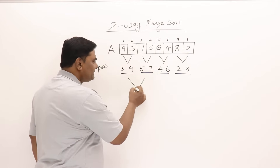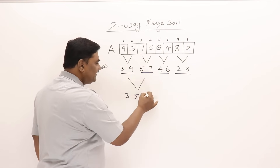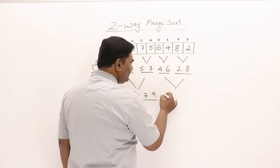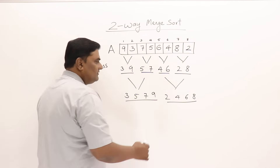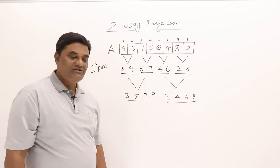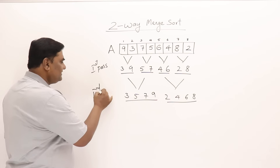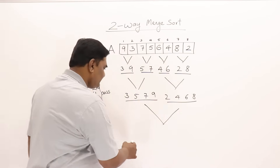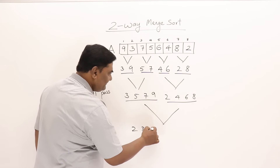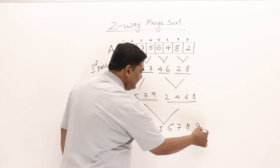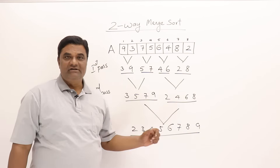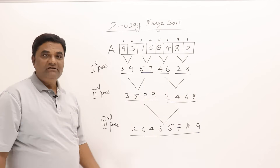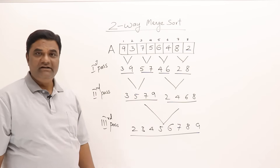Now with two lists of four elements each, we merge them in pass three: 2 is smallest, then 3, 4, 5, 6, 7, 8, 9. After the third pass we have a single sorted list. The elements are now fully sorted, and we can copy them back into array A. An array of eight elements has been sorted using the two-way merge process.